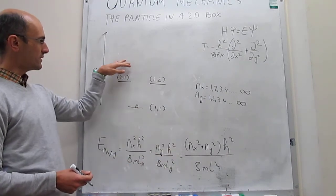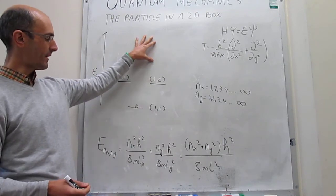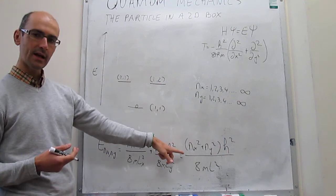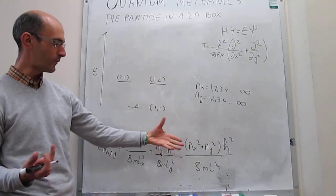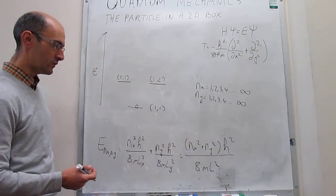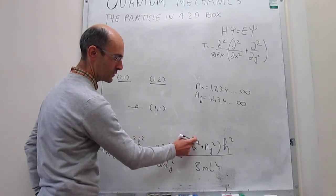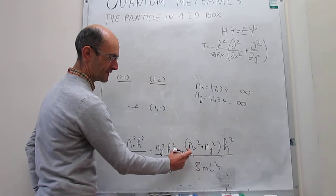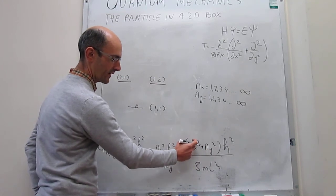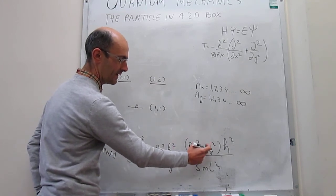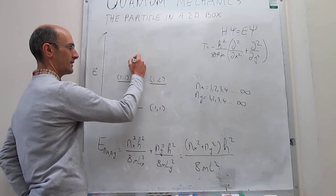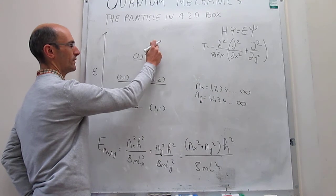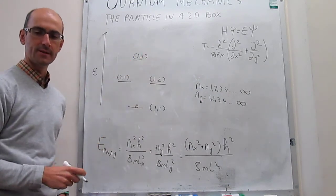We can continue to see how the energy states build up, and check whether the 2,2 state has lower energy than the 3,1 or 1,3 state. For the 2,2 state: 2² + 2² = 8. For the 3,1 state: 3² + 1² = 9 + 1 = 10, so that energy would be higher. Therefore the next energy state is 2,2, and then 1,3 and 3,1 — those also will be degenerate.